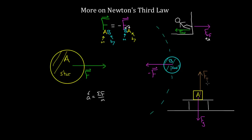So what is the actual third law partner force to gravity? To figure it out, name the two objects interacting. The gravitational force on box A is really the force on object A exerted by the Earth — gravity isn't an object, but the Earth is. Now reverse the labels: the partner force is the force on the Earth by box A. Since opposite means pointing up, box A must be pulling up on the Earth with equal magnitude. If the Earth is pulling down on you, you are pulling up on the Earth.